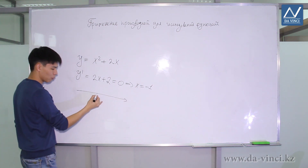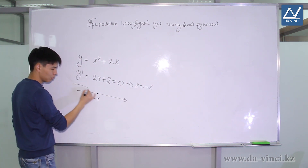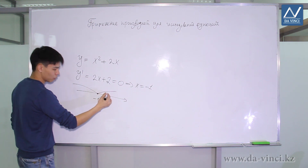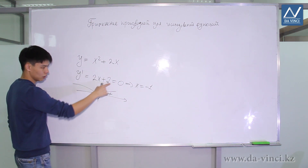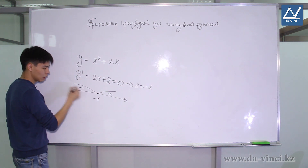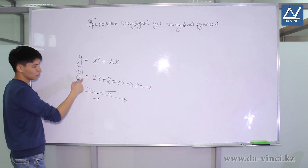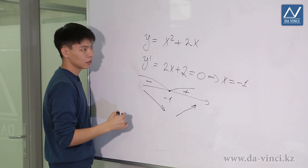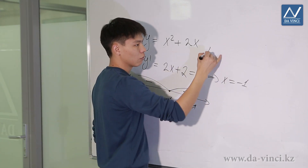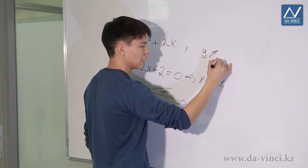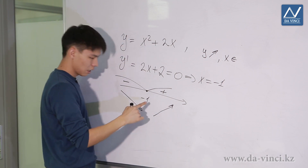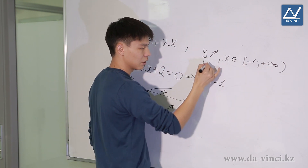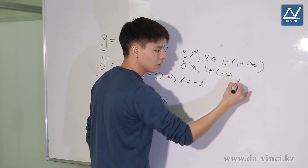Let's mark the point -1 on the number line, giving us two intervals. On the right side the derivative is positive, because if x is greater than -1 the expression is positive. On the left side the derivative is negative, so the function is decreasing there. Where the derivative is positive, the function increases. Therefore, y increases when x belongs to (-1, +∞), and y decreases when x belongs to (-∞, -1).